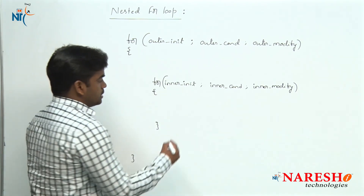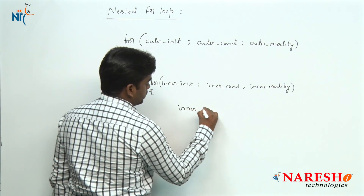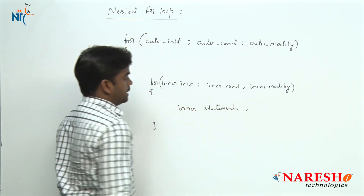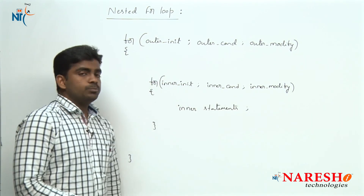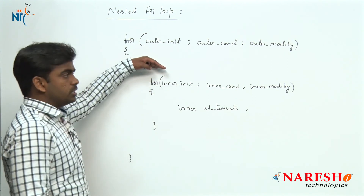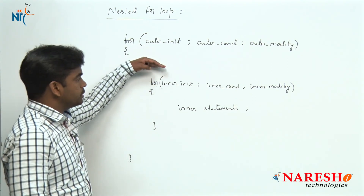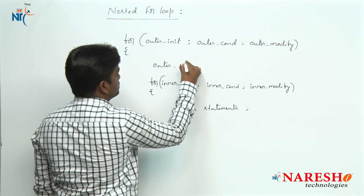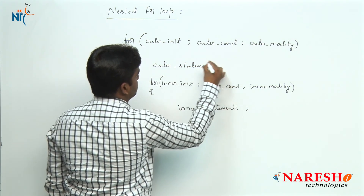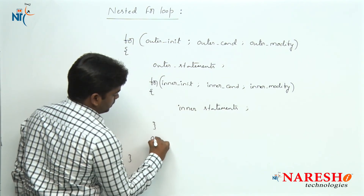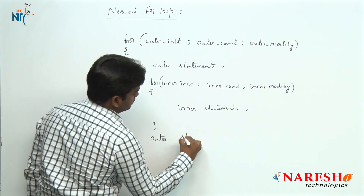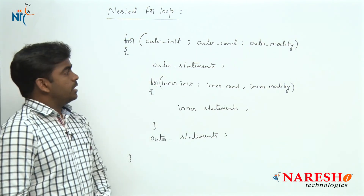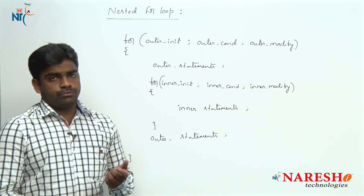Inside the inner loop, we write the statements belonging to the inner loop only — these are inner loop statements. Outer loop statements are placed before and after the inner for loop. So we write outer statements here before the inner loop and outer statements here after the inner loop. This is generally the syntax.